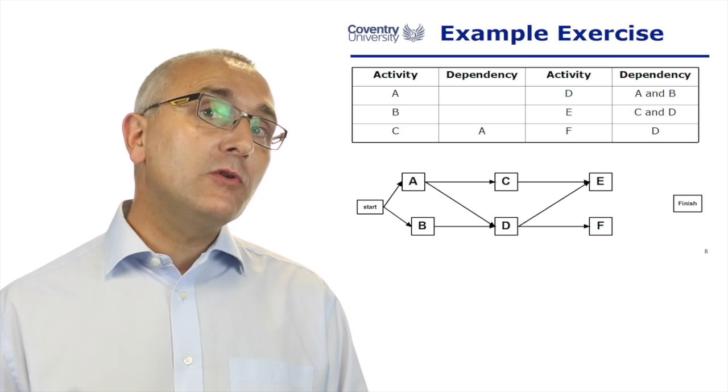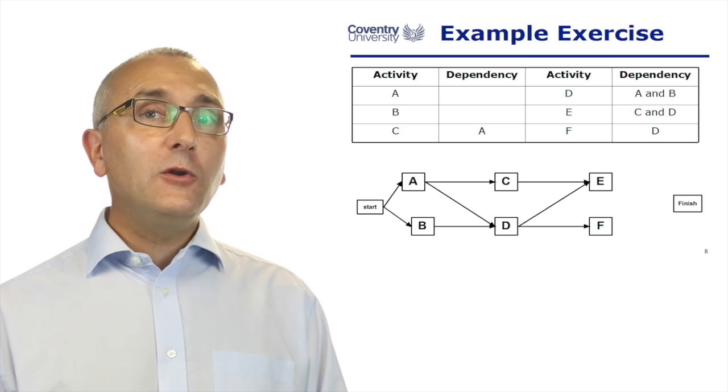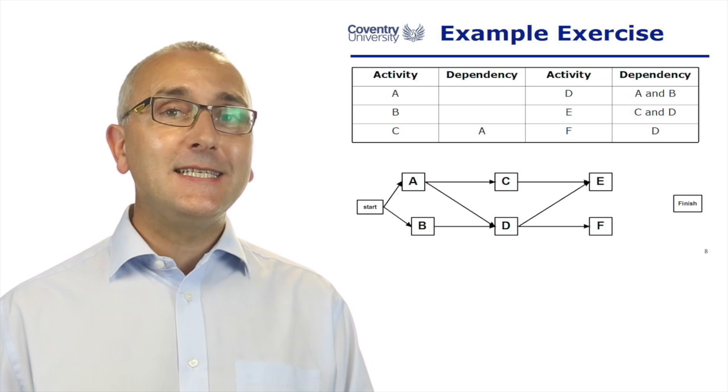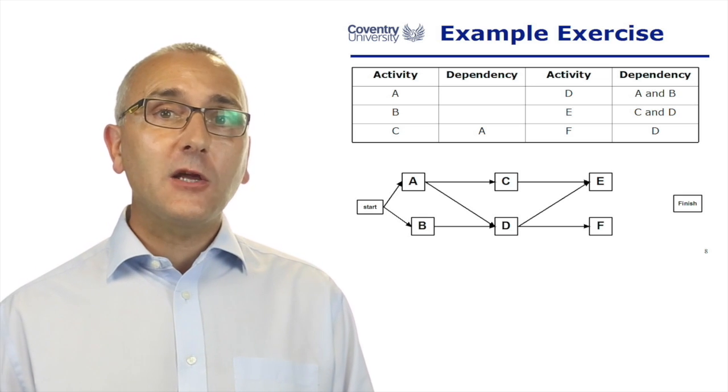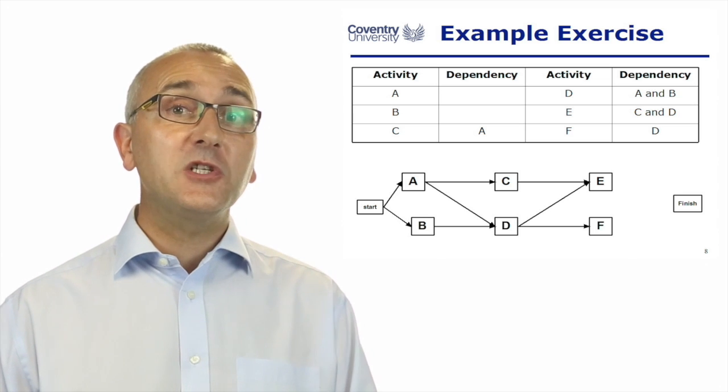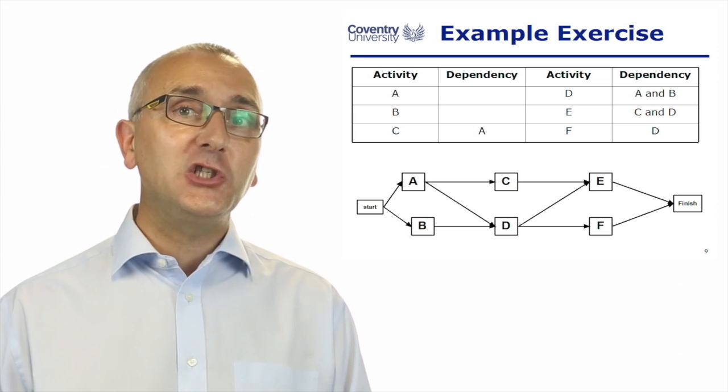And that's all the information we've got in the table. But when we look at our dependency chart, we have got two tasks dangling. Task E goes nowhere. Task F goes nowhere. They have to go somewhere. They go to the end of the project or the finished task.